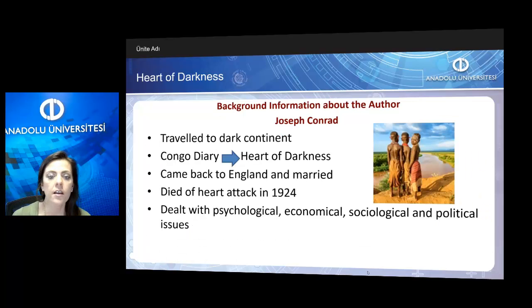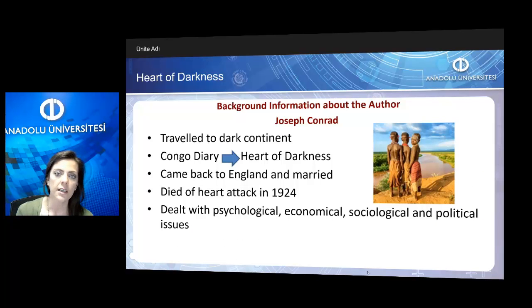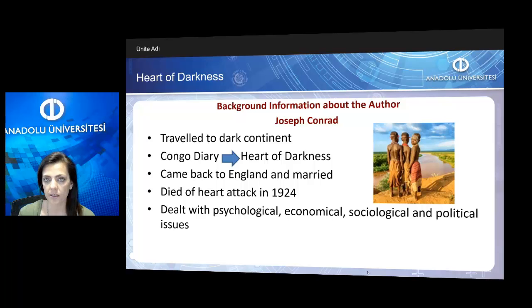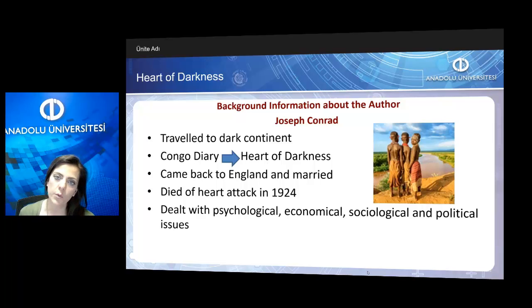He traveled to the dark continent — meaning Africa — and he wrote Congo Diary there, which then turned into Heart of Darkness that we are going to analyze today. After his journey to the dark continent, he came back to England, married and had two sons. And in 1924, he died of a heart attack.